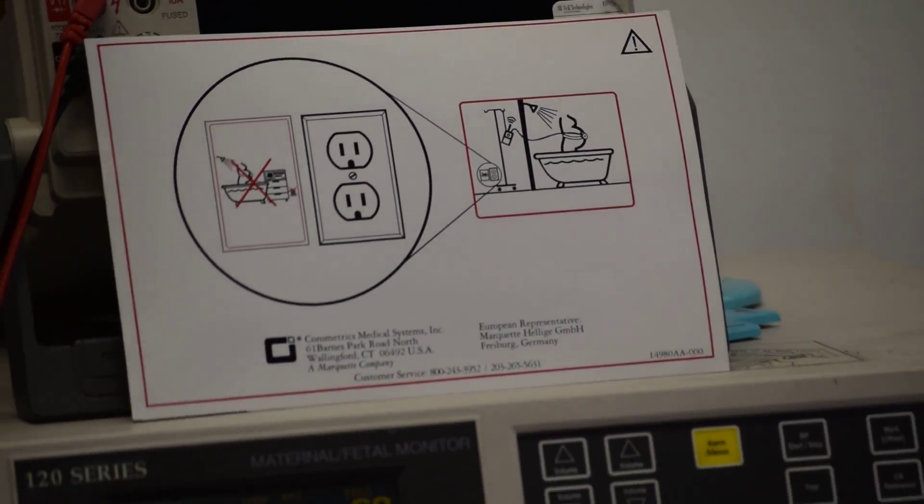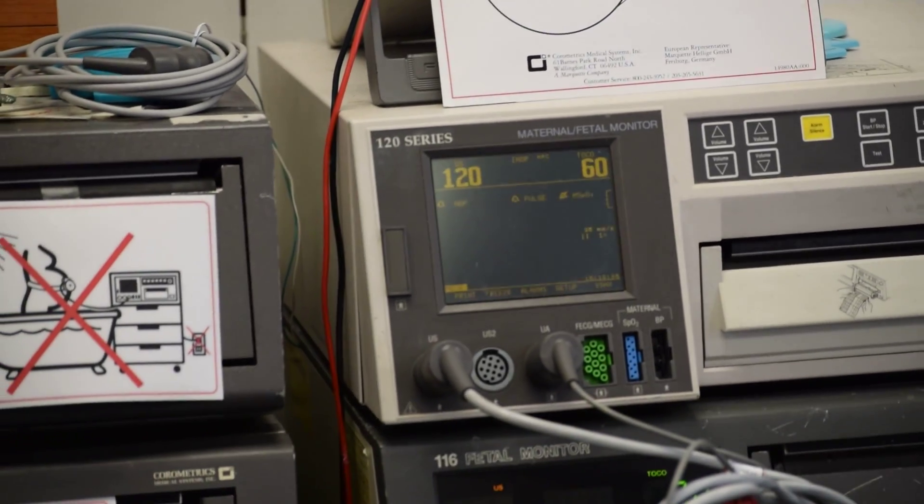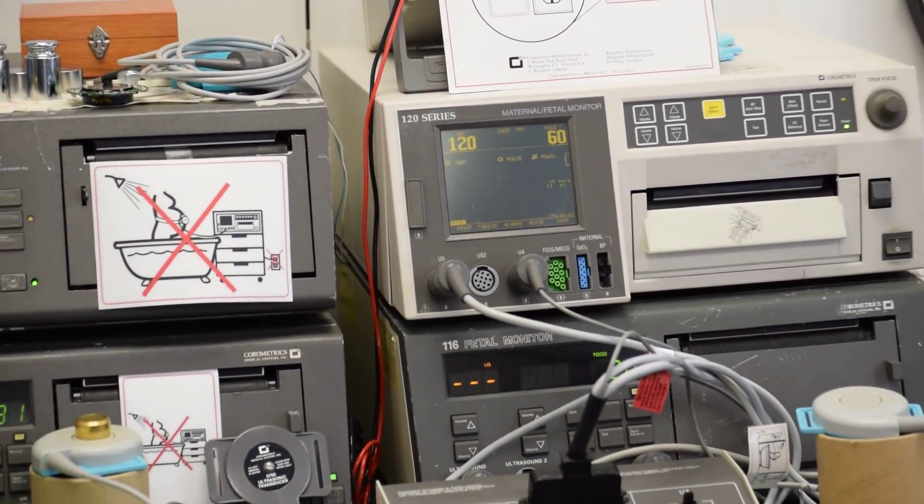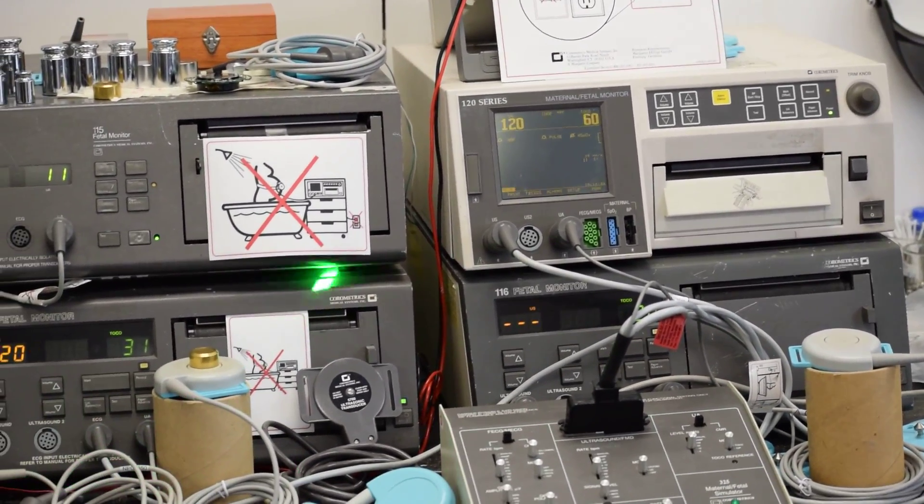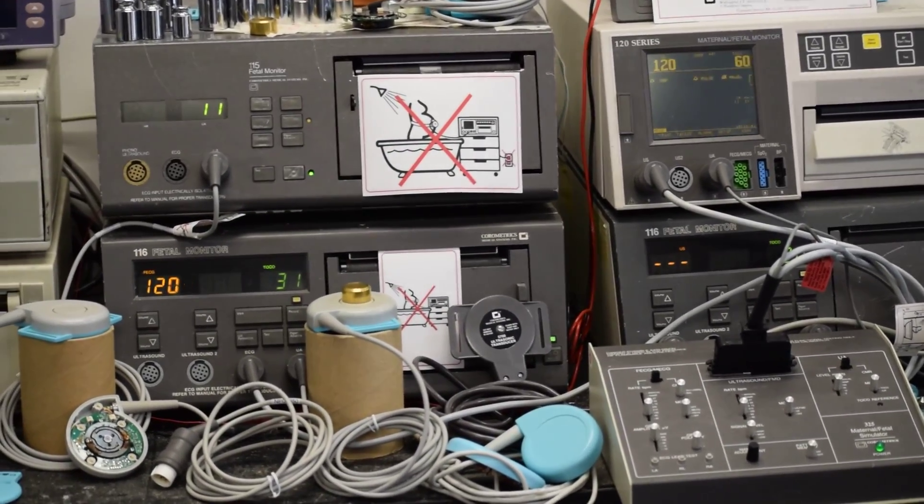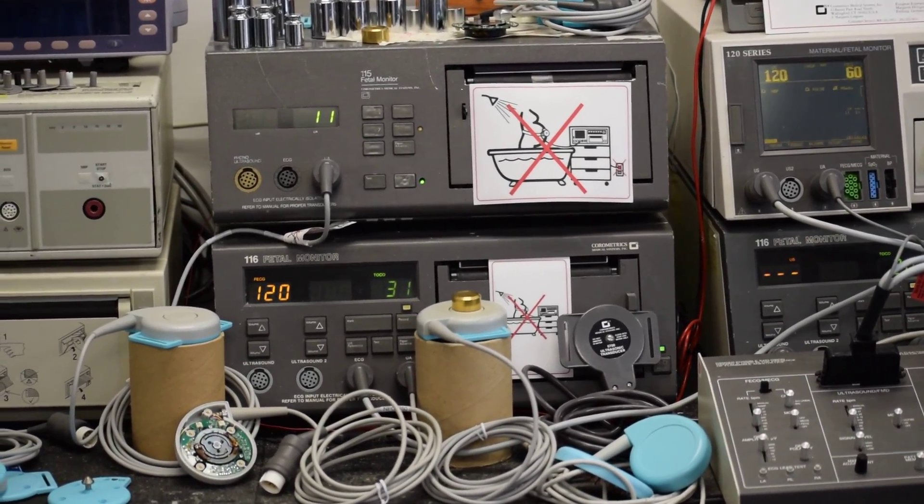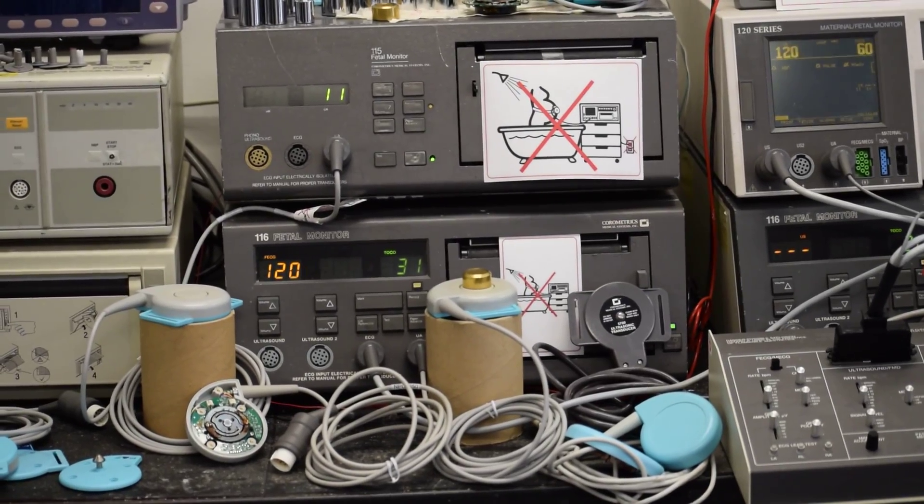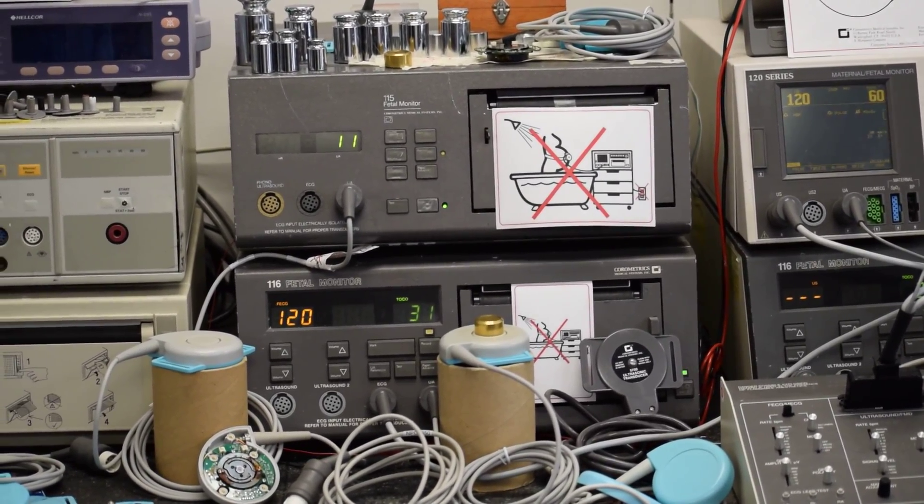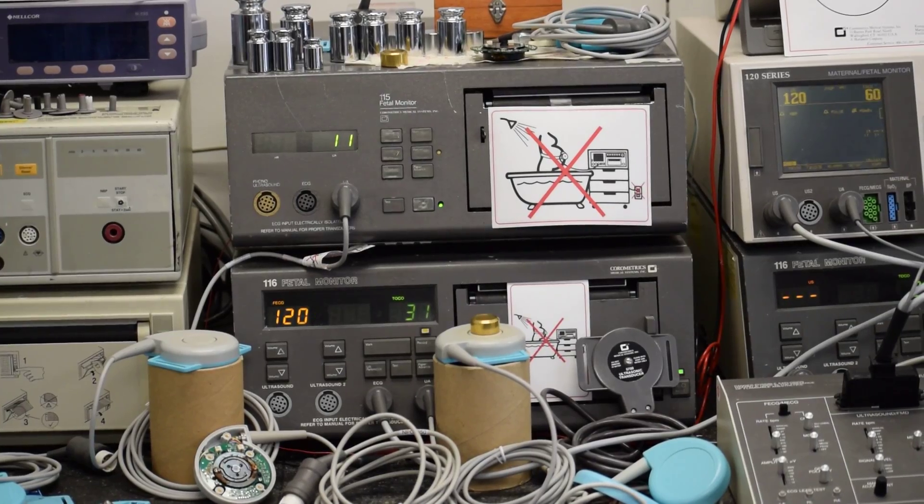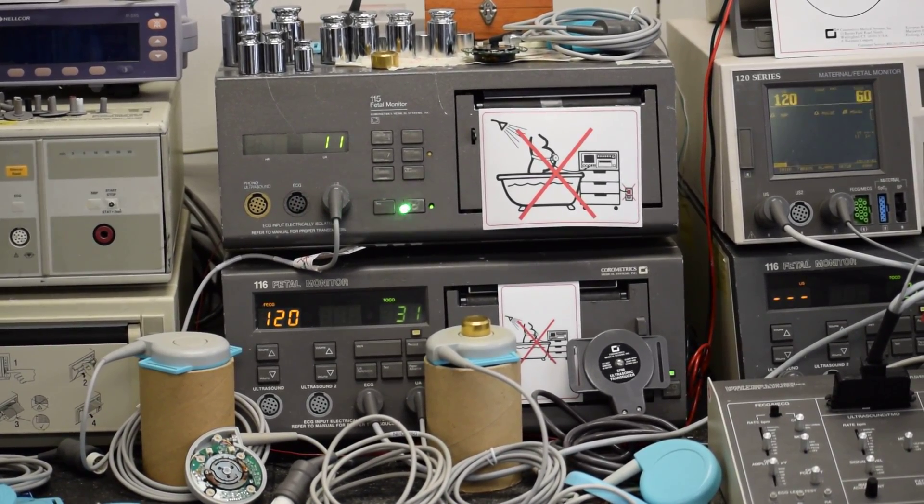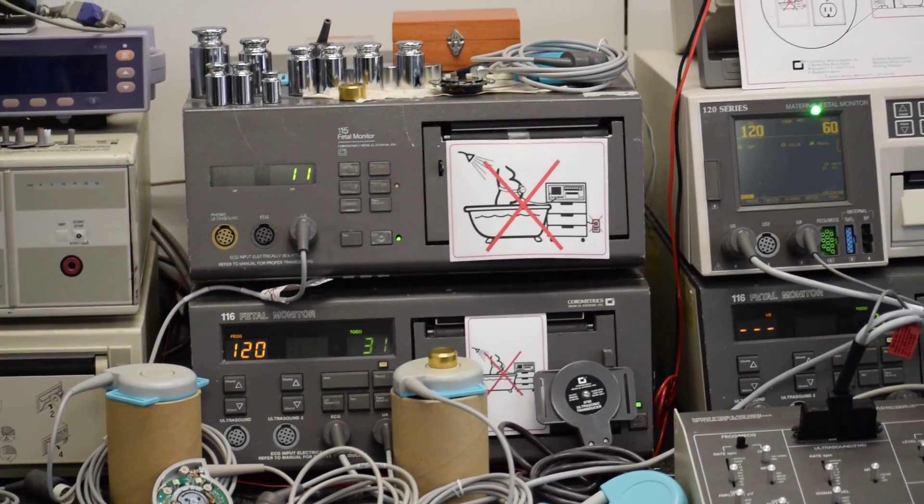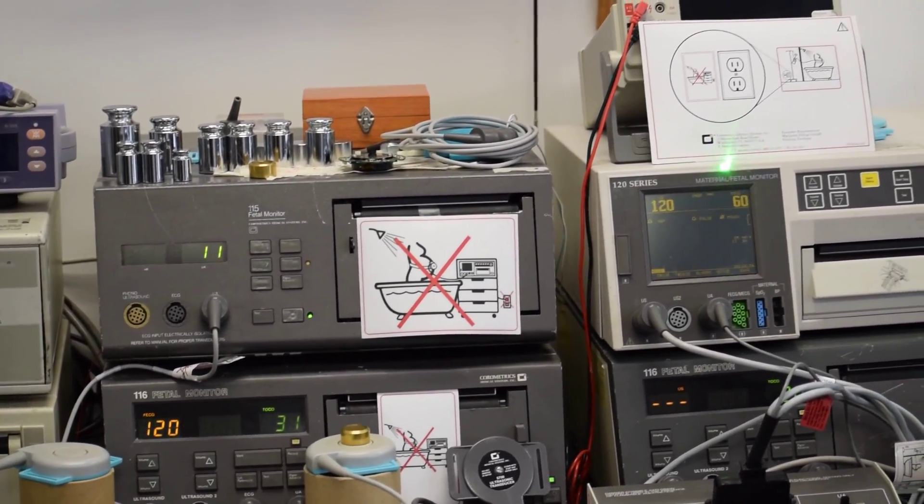Telemetry box can be used on a stand and expectant mom can take a shower as described in a manual. The claim that Nautilus Toko and ultrasound transducers are water submersible are wrong, which can be clarified with GE or Corometrics by calling their customer service toll-free number 1-800-243-3952, which is mentioned here on the labels.